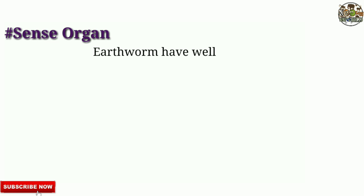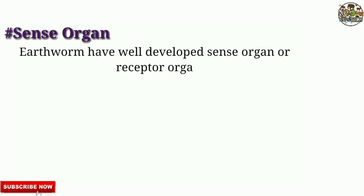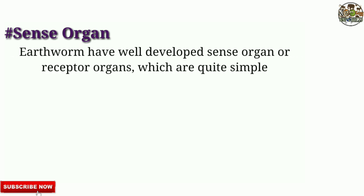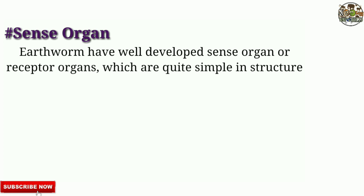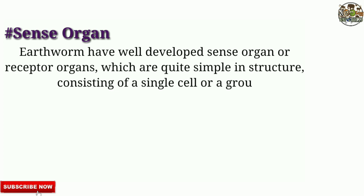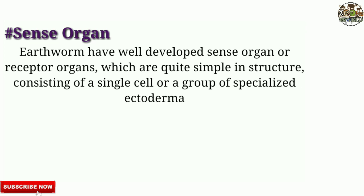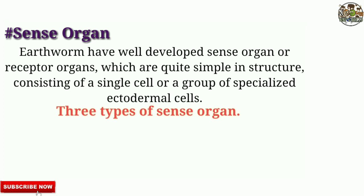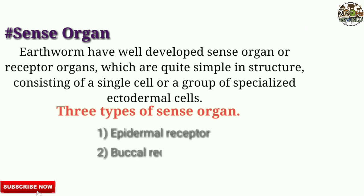Earthworms have well-developed receptor organs which are quite simple in structure, consisting of a single cell or a group of specialized ectodermal cells. Three types of sense organs are found in earthworm: epidermal receptors, buccal receptors, and photoreceptors.